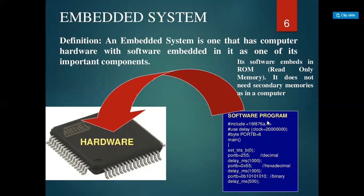Now, coming to the embedded system. An embedded system is a system that has computer hardware with software embedded in it as one of its important components. We do programming — that is the software part — and install it in the hardware. Its software is embedded into ROM and does not need secondary memory as in a computer. This is our embedded system: we have done programming that has been installed into hardware.